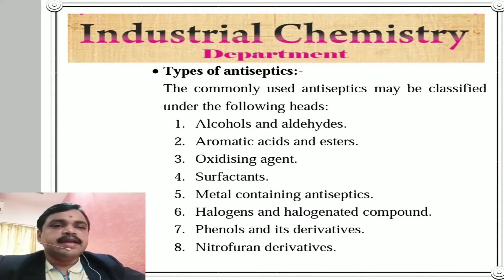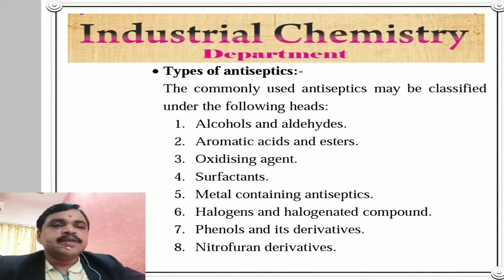Continuing the classification: number six, halogens and halogenated compounds; number seven, phenols and their derivatives; and number eight, nitrofuran derivatives. These are the eight types of antiseptics.